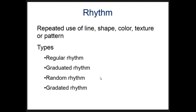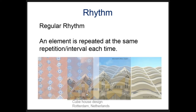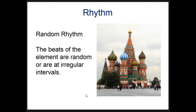Our second principle is rhythm. Like the word in music, rhythm has to do with something repeated — think of a drum in a musical performance. In visual design we repeat line, shape, color, texture, or pattern. Regular rhythm means something is repeated at regular intervals — for example, the blue tiles here, or these balconies going up as well as sideways.